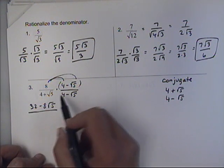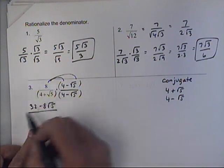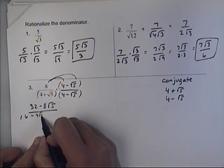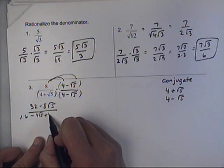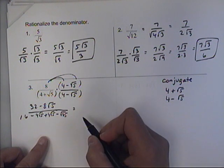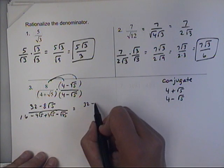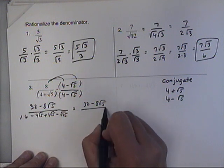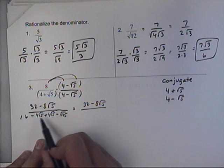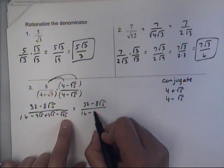On the bottom, I'm going to foil this out. So I'm going to think of this as a binomial times a binomial. So first gives me 16. Outer gives me negative 4 root 5. Inner gives me positive 4 root 5. And last gives me negative square root of 25. So I get 32 minus 8 root 5 over. These two are going to cancel.